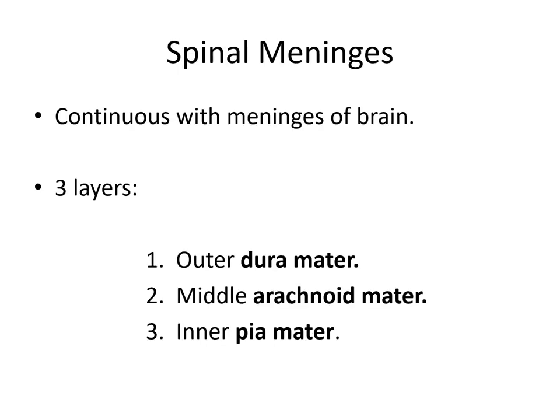The spinal cord has membranes that protect it called the spinal meninges, very similar to the protective layers surrounding the brain. They are continuous with the meninges of the brain, and there are three layers: the outer dura mater — dura means tough, mater means mother — the middle arachnoid mater, named for its spider-like web appearance, and the delicate pia mater, where pia means delicate.